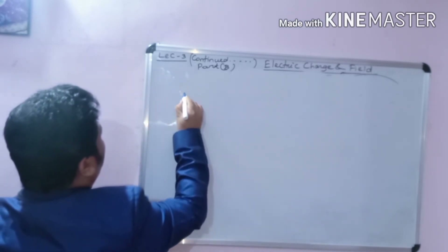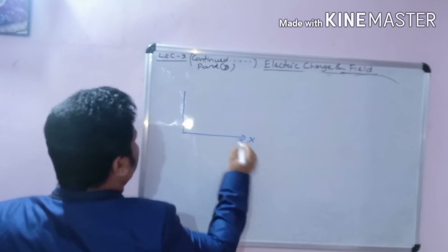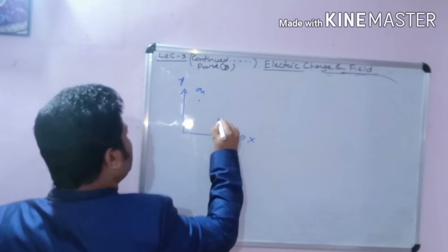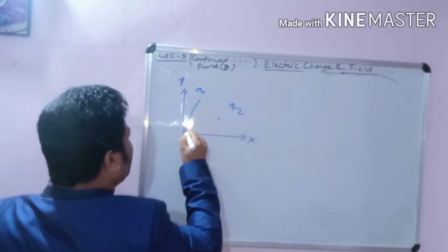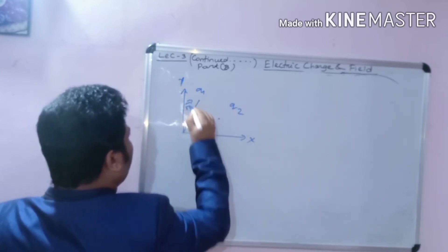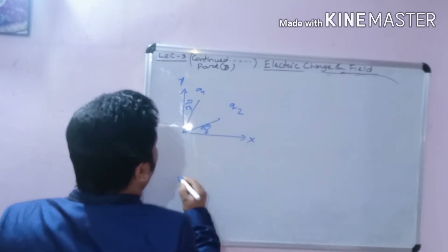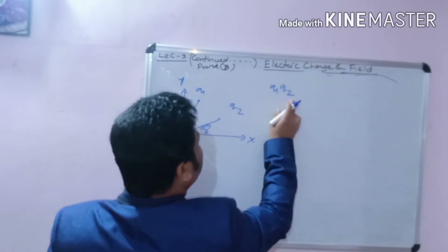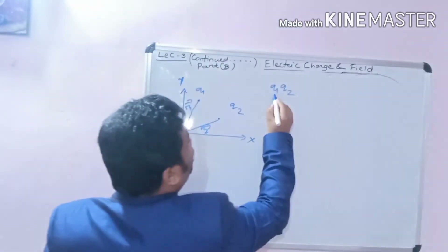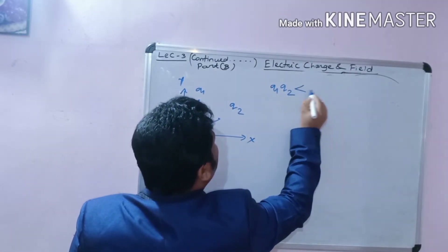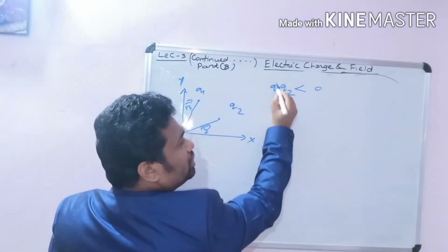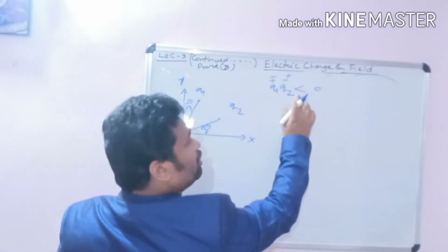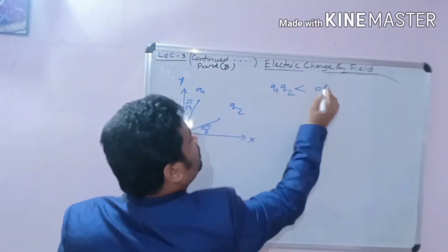Now let us look at the vector form of Coulomb's law. Consider the x-axis and y-axis. Q1 is at position vector r1 and Q2 is at position vector r2. If the force is attractive, the charges have opposite polarity, meaning Q1 times Q2 product is less than zero (plus times minus equals negative). If Q1 Q2 product is greater than zero, the force is repulsive.